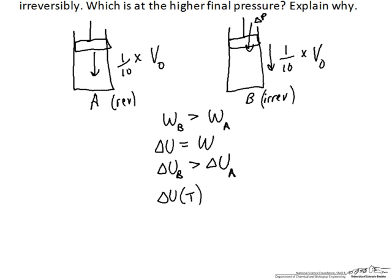If ΔU_B is greater than ΔU_A, that means the temperature change, which is an increase because internal energy is increasing, will be greater for tank B. Therefore, the final temperature in tank B will be greater.